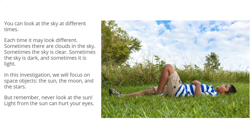You can look at the sky at different times — each time it may look different. Sometimes there are clouds in the sky. Sometimes the sky is clear. Sometimes the sky is dark, and sometimes it is light. In this investigation, we will focus on space objects: the sun, the moon, and the stars. But remember, never look at the sun — light from the sun can hurt your eyes.